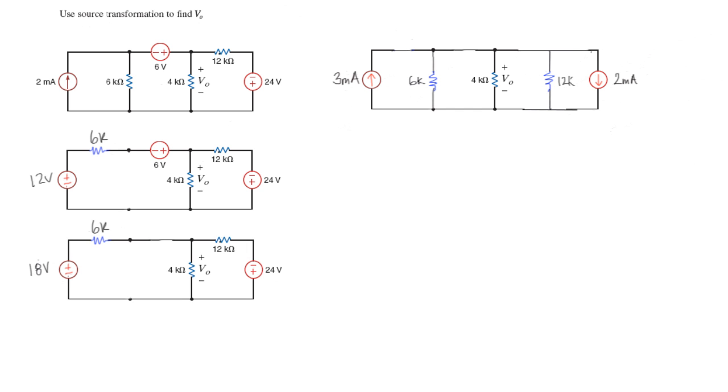And again, using Ohm's law, the current is equal to voltage over resistance. So 24 divided by the 12K comes out to 0.002, which is 2 milliamps, this current source here, in parallel with this same resistor.